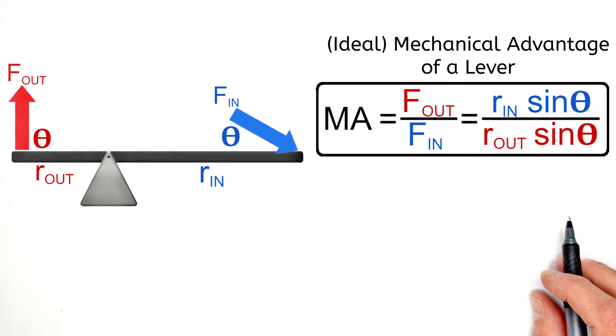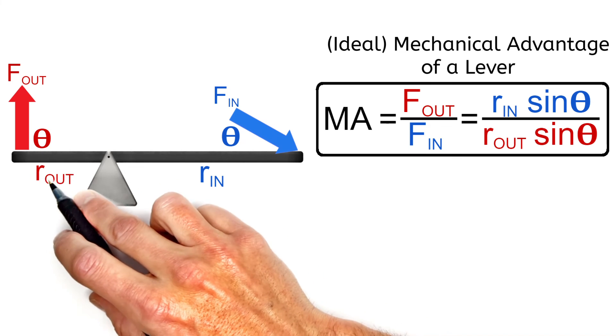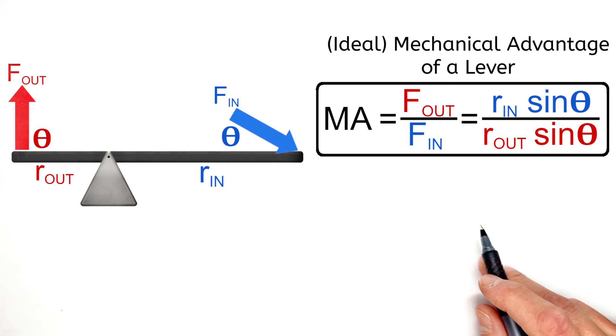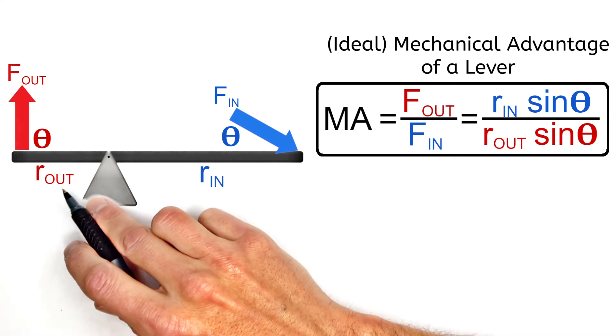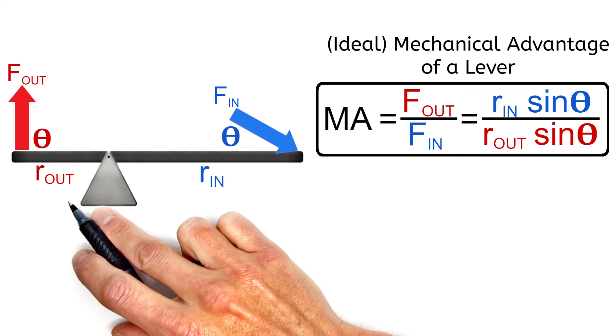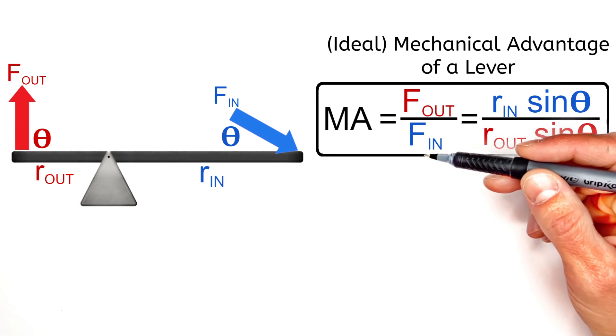And according to the math, we should see the opposite thing on the other side of the lever. Changing the direction of the output force can increase the mechanical advantage. Now how we could possibly get an output force to act at an angle starts to get into compound machines, not simple machines that we're dealing with here, and that's a topic for another day.